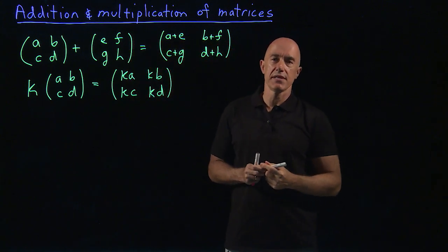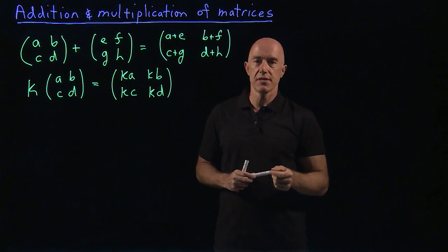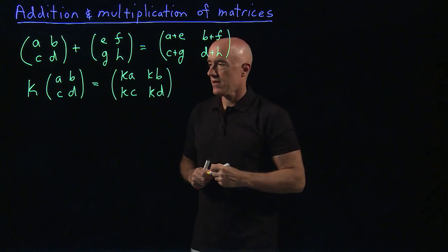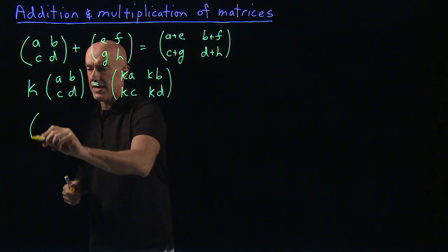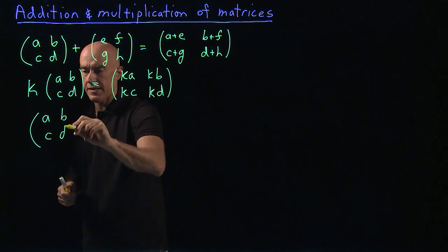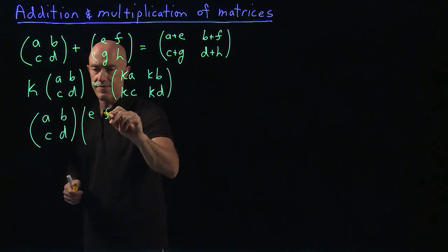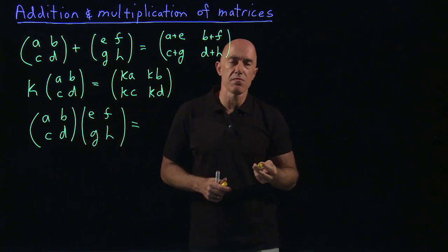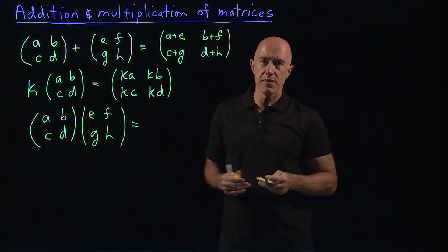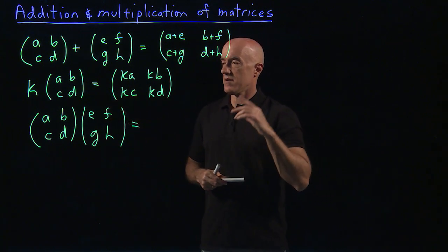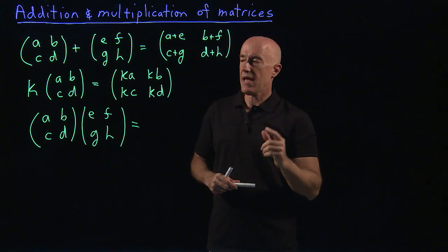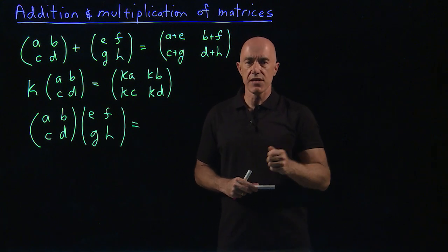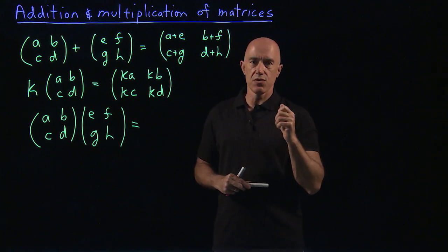The tricky thing about matrices is actually multiplying two matrices. So let's multiply two by two matrices: [A, B, C, D] times [E, F, G, H]. You might think you can multiply each of the elements separately. The mathematical software MATLAB actually has an operation that lets you do that, but in general, when you do matrix multiplication, you have to do it very specially.